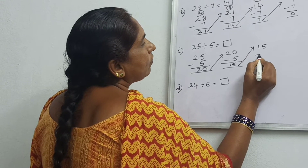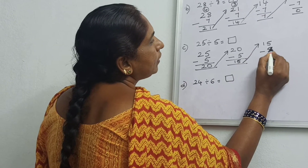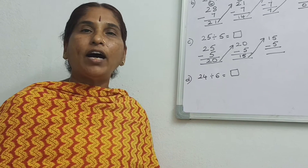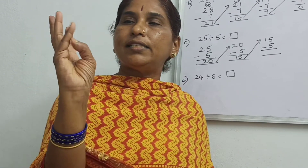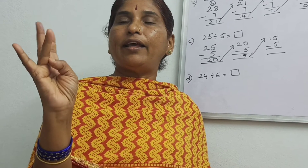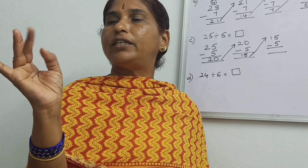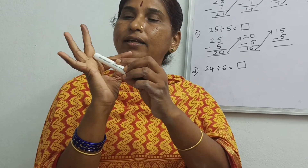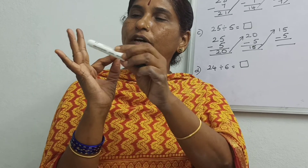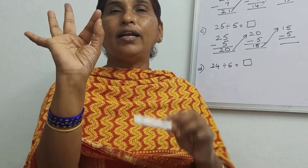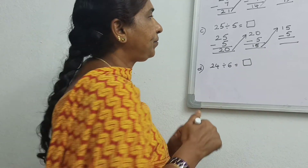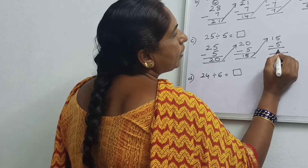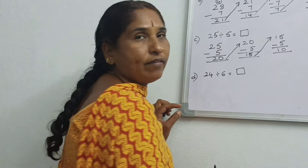Again you have to subtract with 5 — 5 is the divisor. Count 5 upward: 6, 7, 8, 9, 10, 11, 12, 13, 14, 15. How many? 10. Or you can take 5 minus 5 equals 0 and here 1. Like this also you can take.